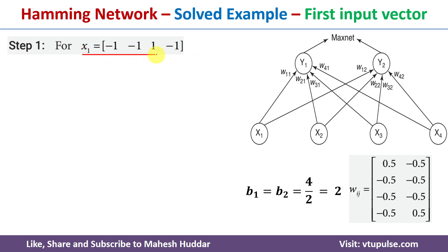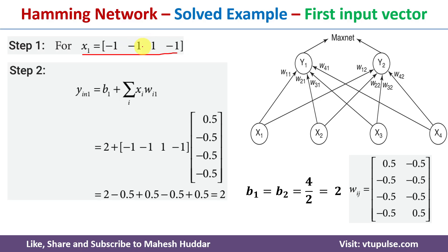We start with the first input vector: X1 = [−1, −1, 1, −1]. We need to calculate the net input at Y1 and at Y2, then compare them using the max-net network, which selects the node with the maximum activation and assigns the input vector to that cluster. The net input at Y1 is: Y_in1 = B1 + Σ(Xi · Wi1) for all i.